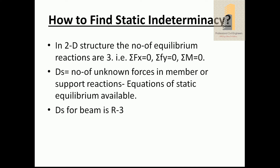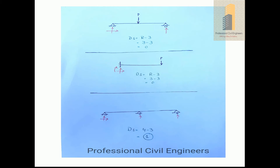Here R is the unknown forces, which are support reactions, and 3 is the equilibrium equations available in the beam, truss, or any other structure. For a simply supported beam with a hinge support and a roller support, there are two reactions at hinge and one at roller, so DS = 3 minus 3 = 0. This means the beam is statically determinate.